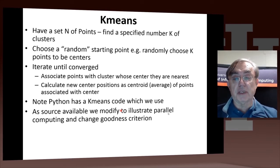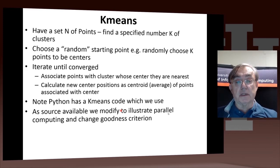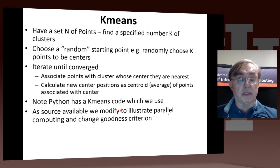Then we iterate the algorithm, where we associate points with the cluster. That's what's done with the utility VQ vector quantization. Then we calculate the new center positions as the centroid or the average of the points associated with each cluster and its center. Python has a k-means code which we will use, and as the source is online, I gave you a link. We can change that code for our own satisfaction.